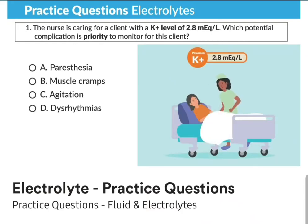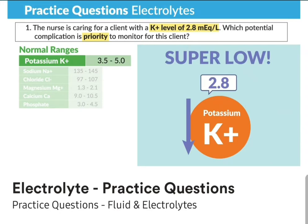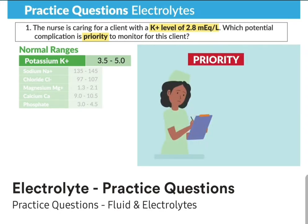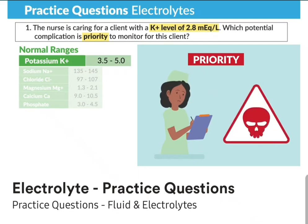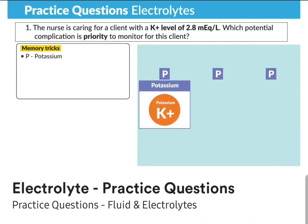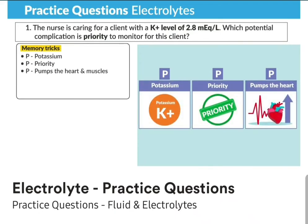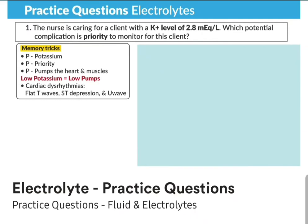Let's break this question down. The client has a potassium of 2.8 — normal is 3.5 to 5.0 — so 2.8 is super low. The question asks for the priority to monitor. Think: what kills the patient the fastest? P for potassium is priority because it pumps the heart and the muscles. For low potassium, think low pumps — we get cardiac dysrhythmias, namely flat T waves, ST depression, and a funky little U wave.